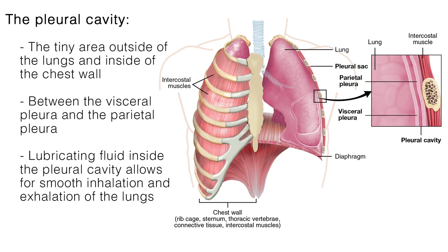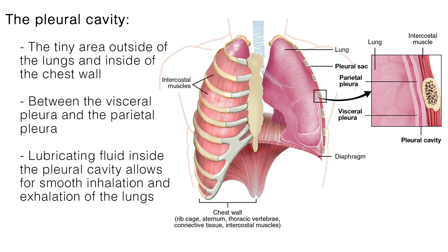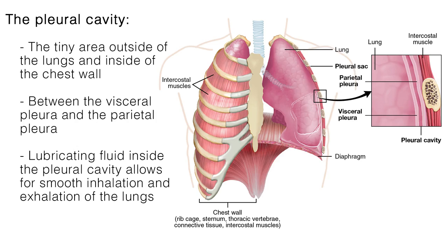The pleural space, or pleural cavity, is the tiny area outside of the lungs and inside of the chest wall. It is between the visceral pleura, which covers the lungs, and the parietal pleura, which is attached to the chest wall. There is a lubricating fluid inside the pleural cavity that allows for smooth inhalation and exhalation of the lungs.